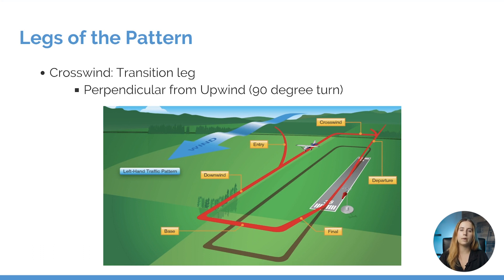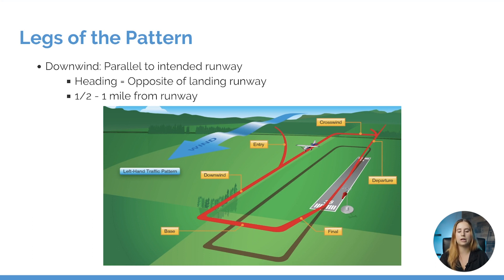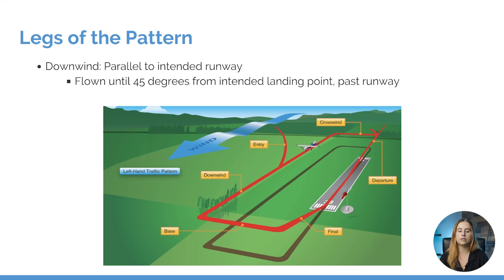Next, we have our downwind leg. The downwind is flown parallel to our intended runway of landing, which means our heading is going to be opposite of our landing runway. So if we are landing on runway 36, while flying the downwind leg our heading will be 180. The downwind leg is typically flown about a half mile to one mile away from the runway, and is flown until the aircraft reaches about 45 degrees from the intended landing point past the runway. As you can see in the FAA graphic, the aircraft actually flies past the runway until they reach that 45-degree angle from their point of landing.